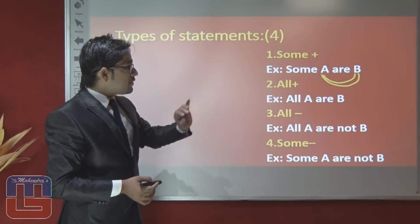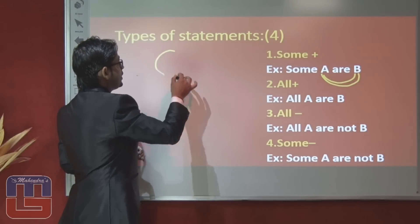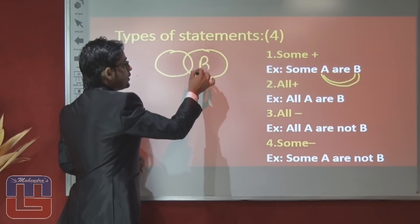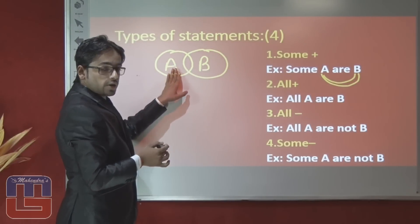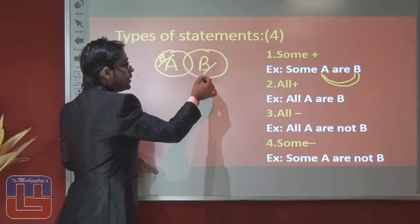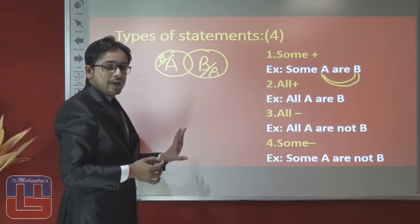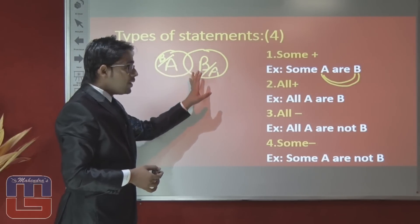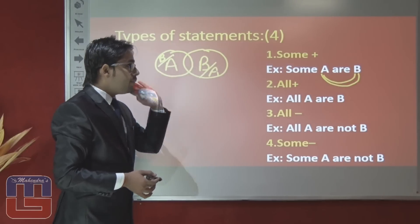For example, 'some A are B' is given. It doesn't matter whether we write A first or B first — we can write B or A. We can say that there is an equal relation between A and B; both sides have the same relation between A and B.